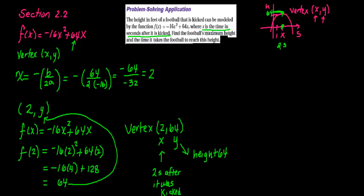The first question was, find the football's maximum height. This is the answer: the maximum height is 64. And then it asks the time it takes the football to reach this height. Well, it took the football 2 seconds to reach a height of 64. And there is your answer.